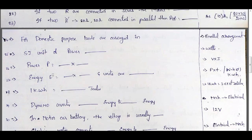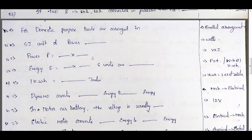Power is the product of voltage and current. Energy is the product of power and time, and the units of electrical energy are watt-hours or kilowatt-hours.